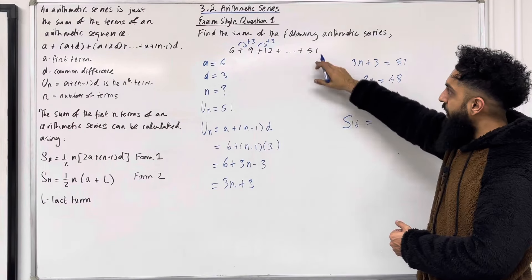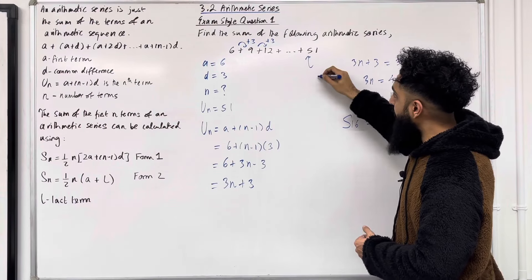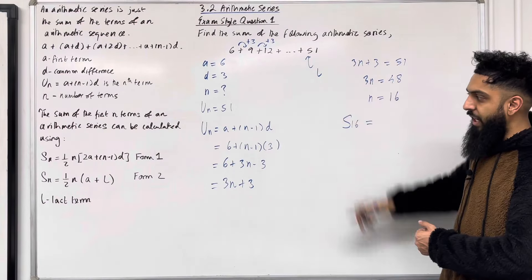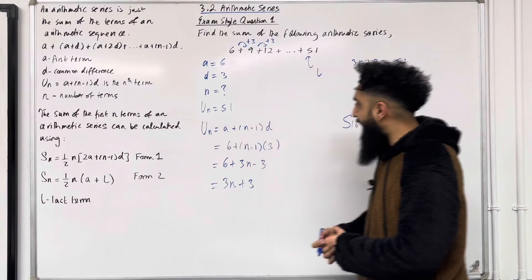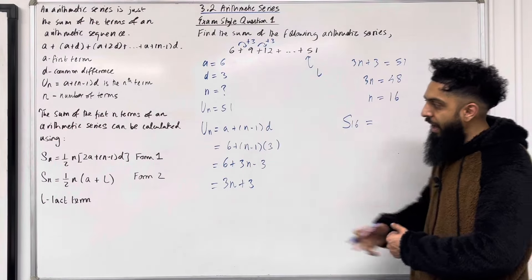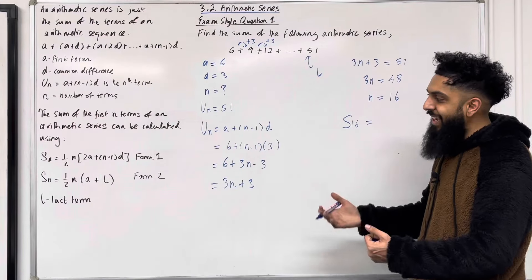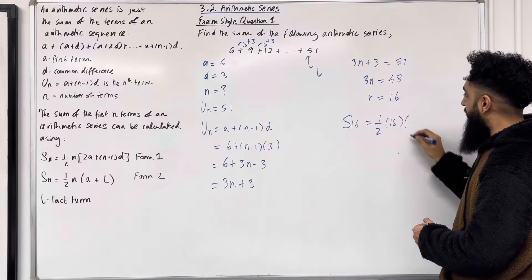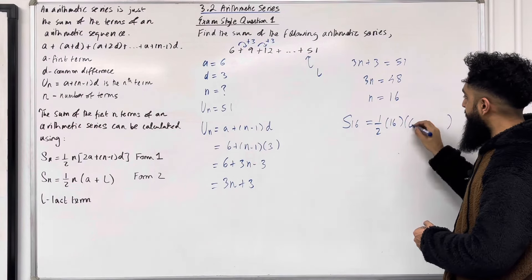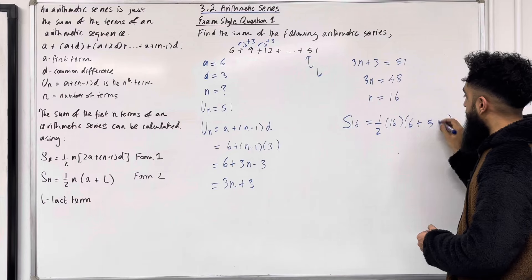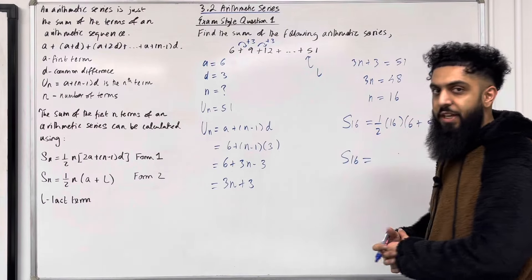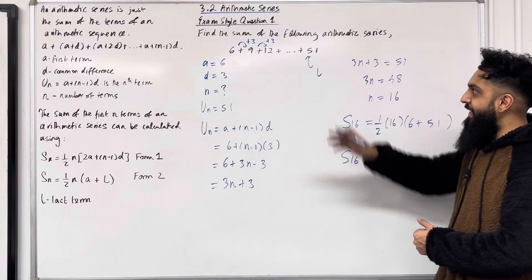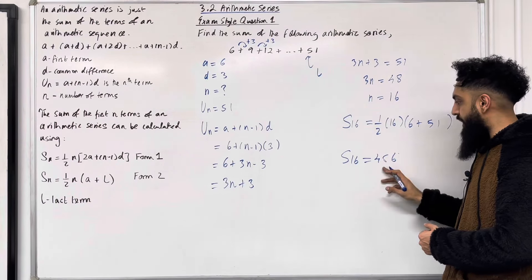We are finding S16 — the sum of the first 16 terms. Since the last term L equals 51 is given, we can apply Form 2. S16 equals one half times 16 times bracket A plus L, which is one half times 16 times bracket 6 plus 51. Putting this into the calculator gives S16 equals 456. So the sum of the first 16 terms is 456.